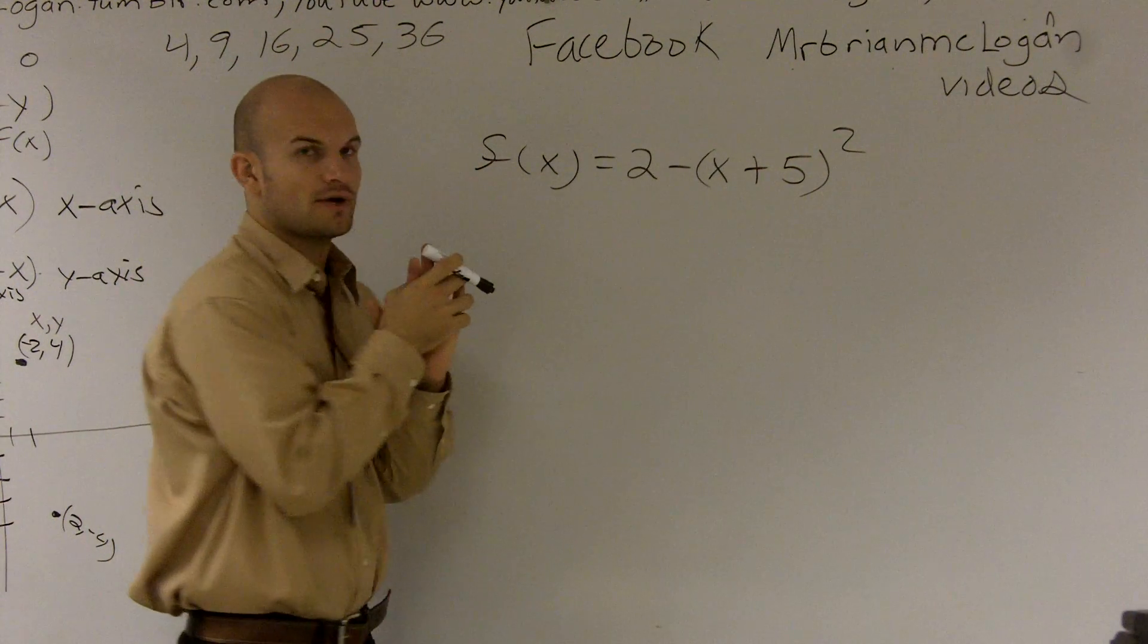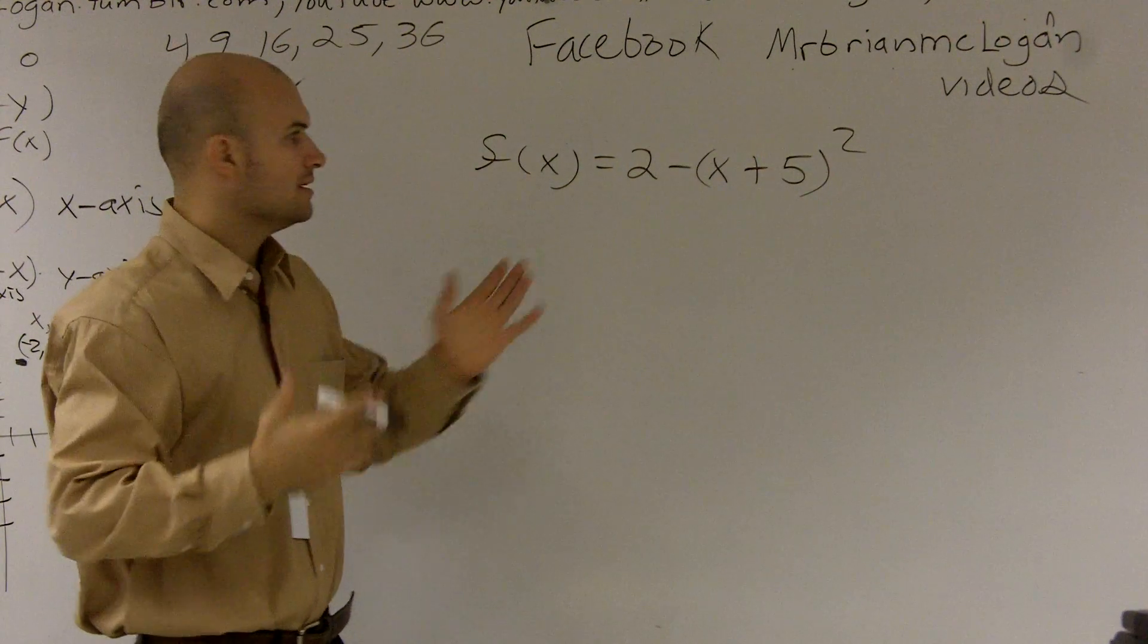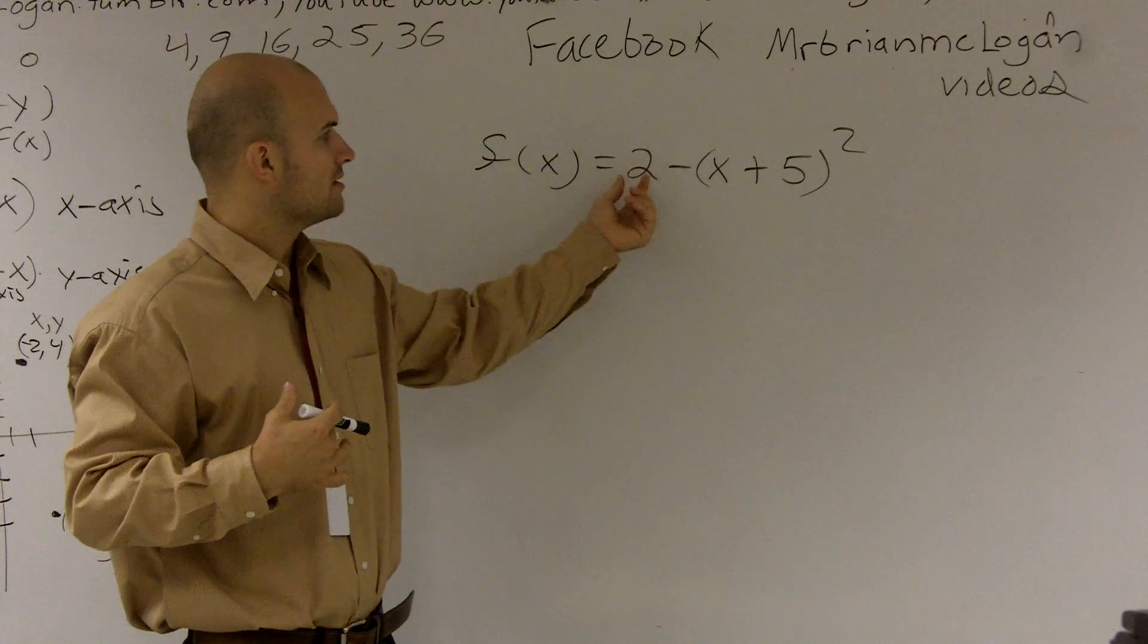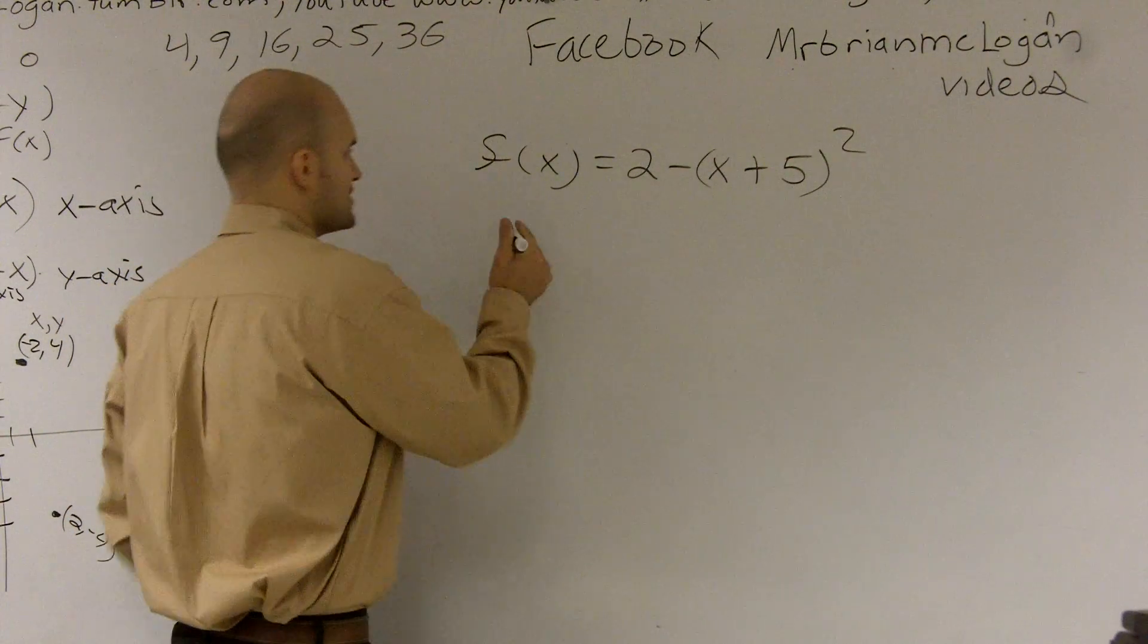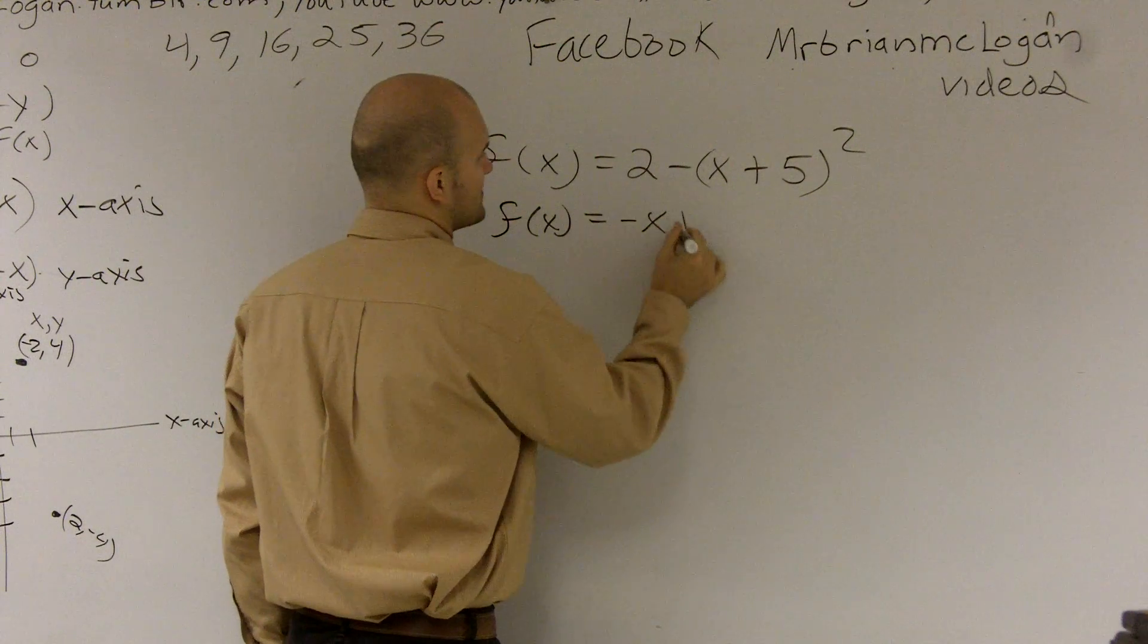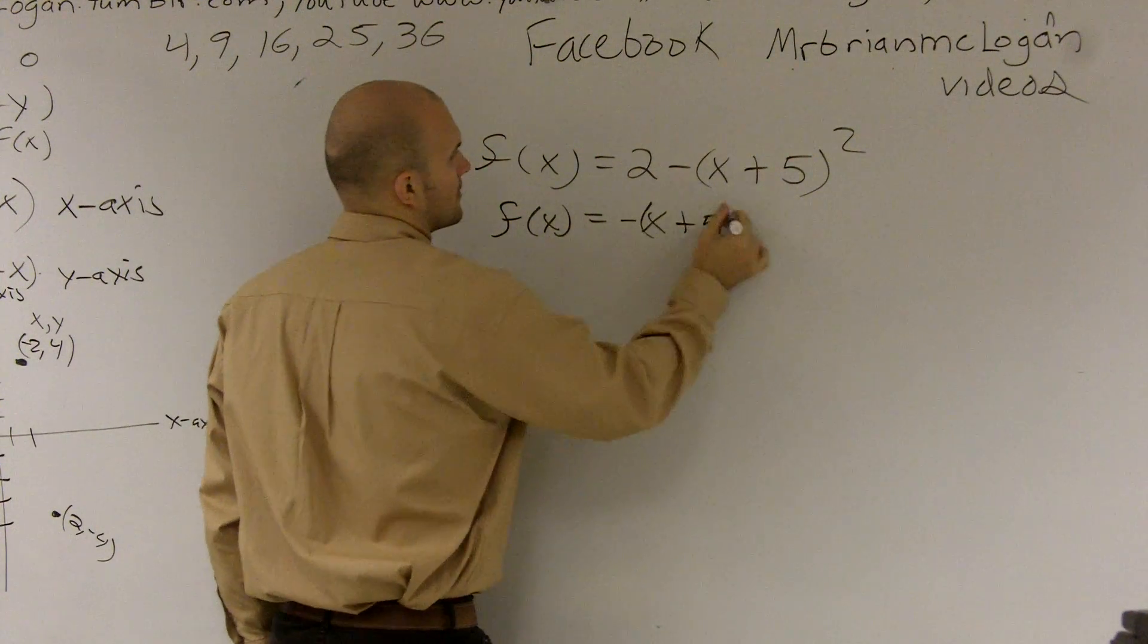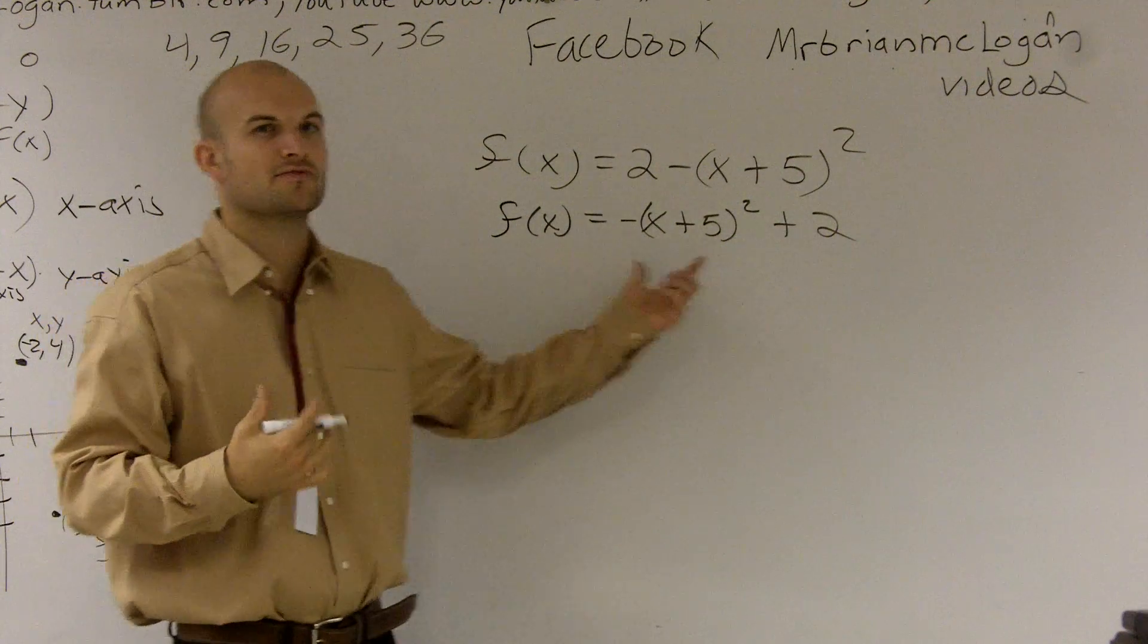So when we're first going to describe this transformation, the first thing I'm going to do is just rearrange it to make it a little bit more familiar for us. So they wrote the constant in front. We always like to write the constant in the back. So I'm just going to rearrange it first of all. f(x) = -(x+5)² + 2. I want to write it to the form that I'm used to.